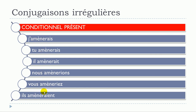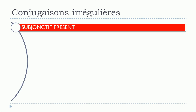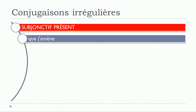The modification is exactly the same as before — just put the accent grave on top of the E: amènerais, amènerions, amèneriez, amèneraient. Now let's see the last one: le subjonctif présent — que j'amène.